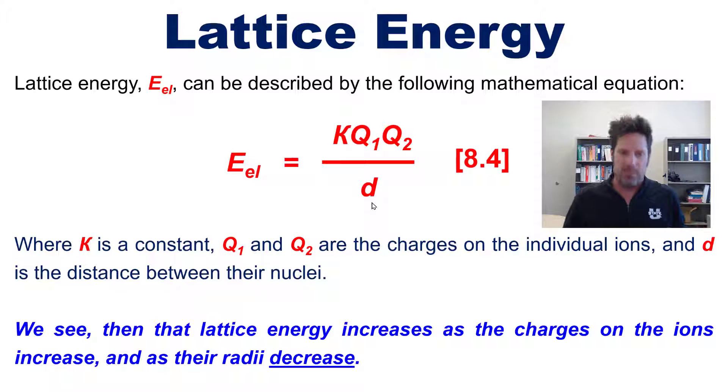Sometimes I use the analogy: with whom do you have a stronger bond, your sibling or your fourth cousin? Typically it's your sibling. Why? Because the distance between you is shorter. Shorter distance equals stronger bond, longer distance equals weaker bond. Make sense? Good.